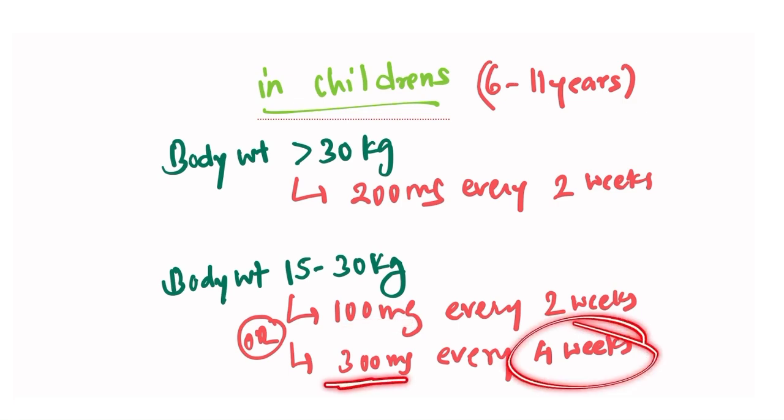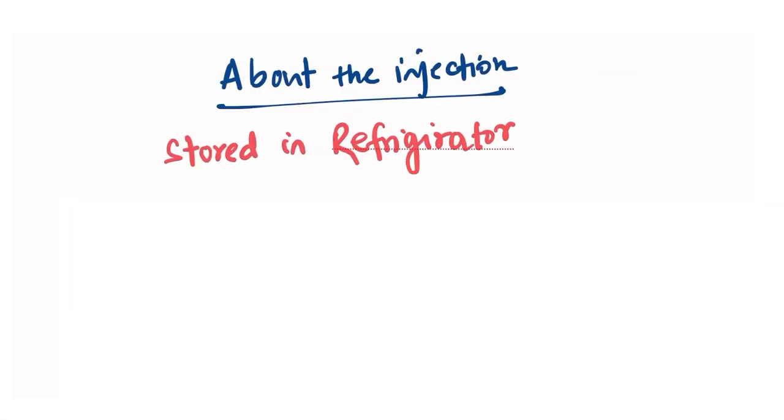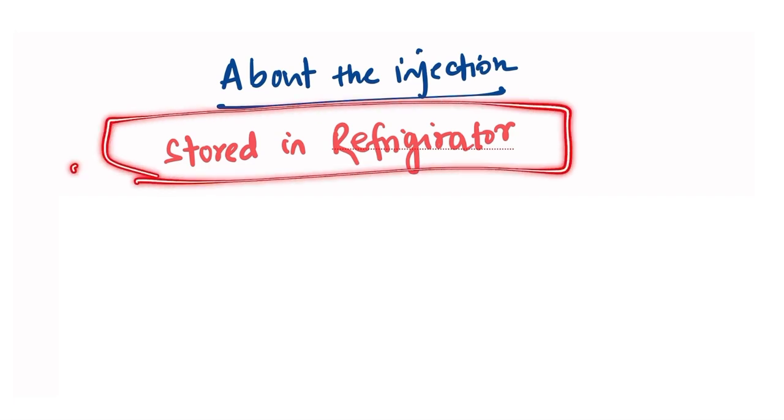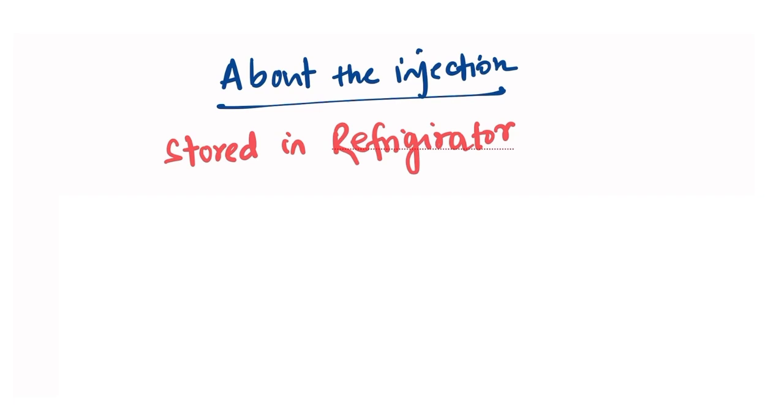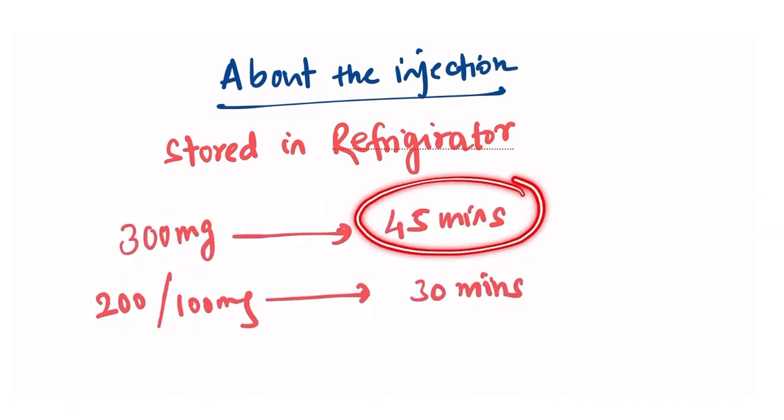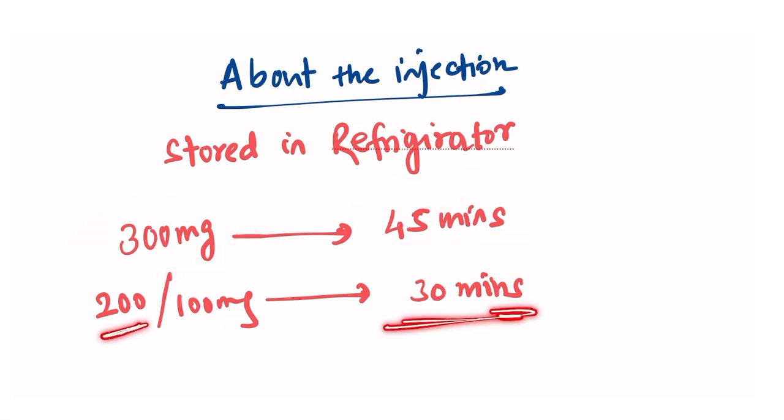Now a special note about the injection. The injection has to be stored in refrigerator but at the time of administration this drug should be taken out of refrigerator and kept in room air for at least 45 minutes in case of 300 mg injection and for at least 30 minutes in case of 200 and 100 mg injection.